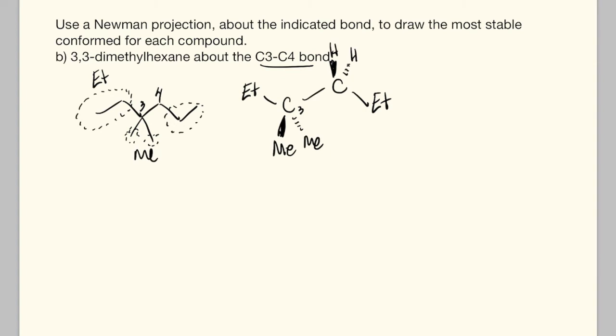Now we want to cite down the bond here and draw the Newman projection from that. The front carbon has an ethyl group pointing straight up and two methyl groups. On the back carbon, I see an ethyl group pointing down and two hydrogens.